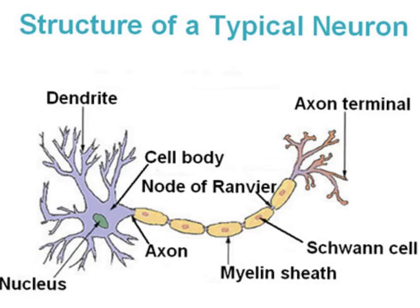A neuron is an excitable electrical cell that processes and transmits information by electrical and chemical signaling. These signalings are called synapses, and this neuron is broken up into many different parts.